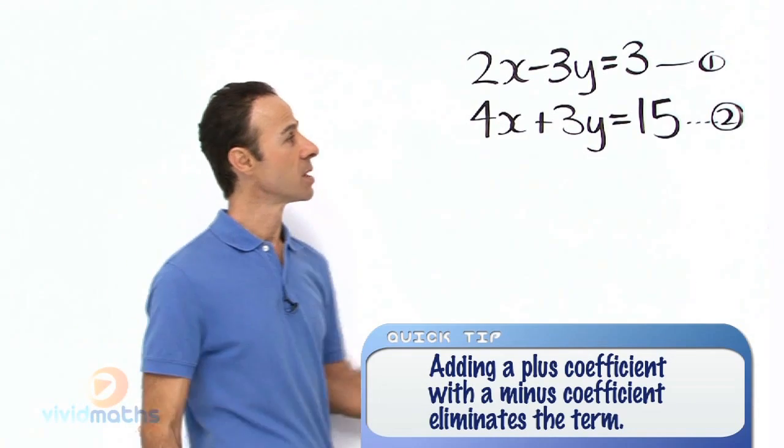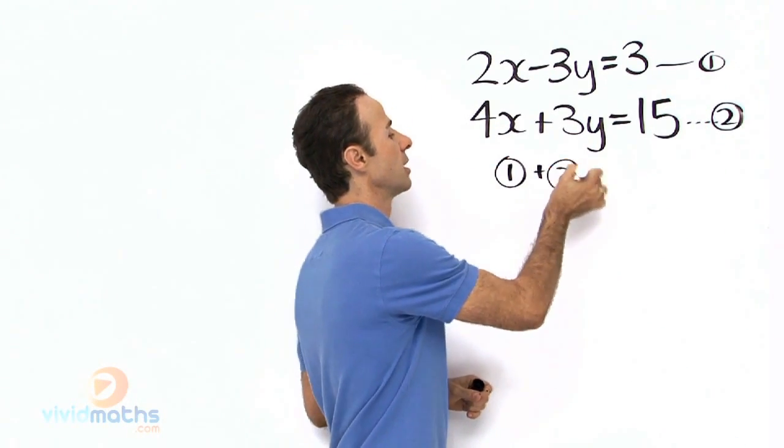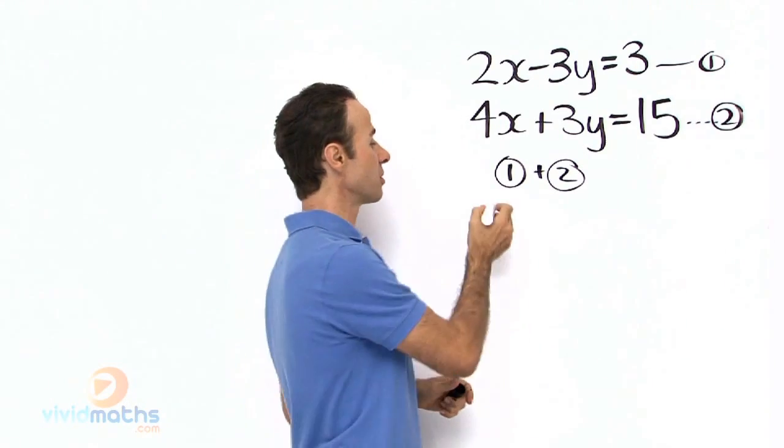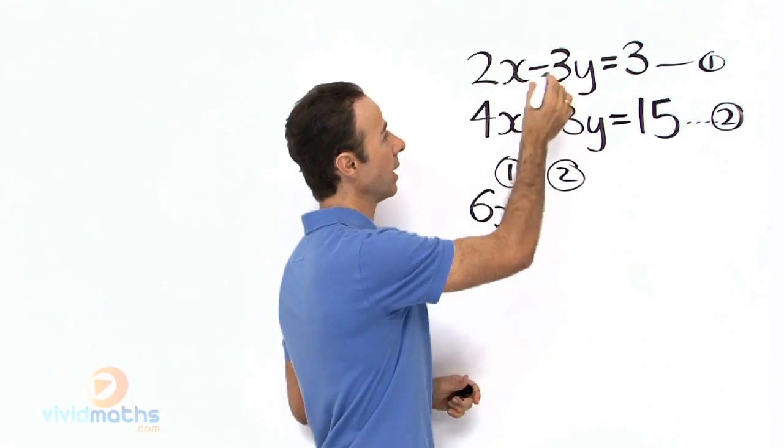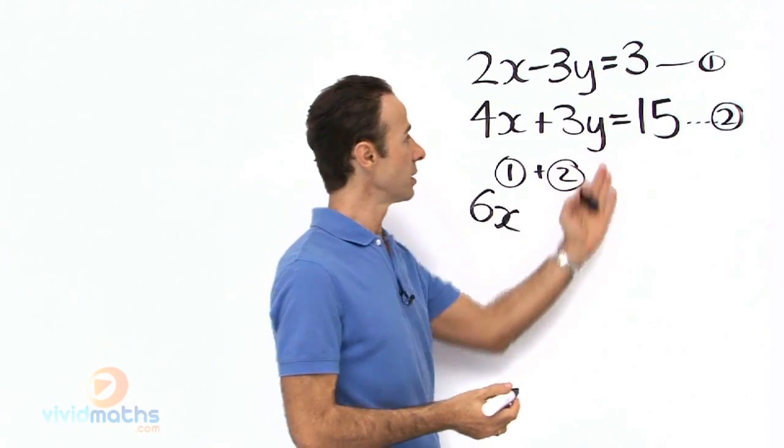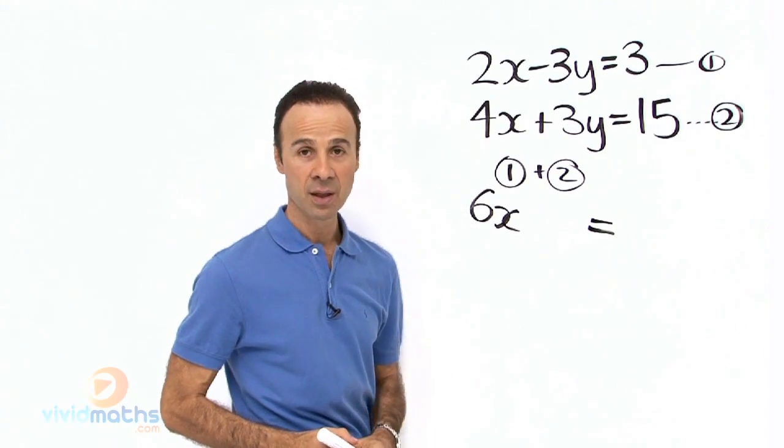So let's add them together. This is equation 1 plus equation 2. Let's have a look: 2x plus 4x yields 6x, and the y's are eliminated. -3y plus 3y, that's zero. Bring down the equals, and 15 plus 3, that's 18.